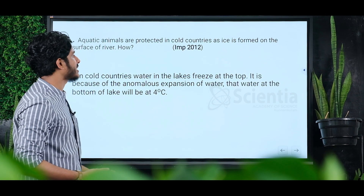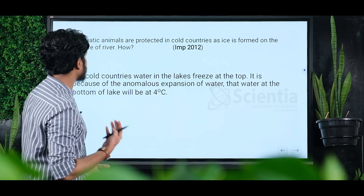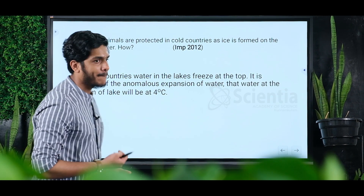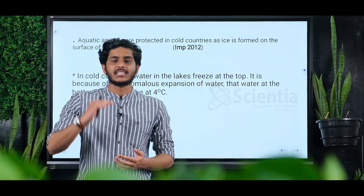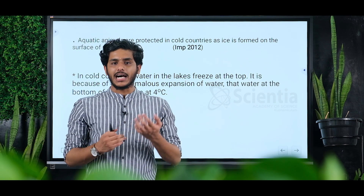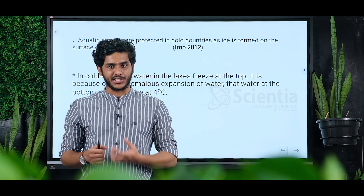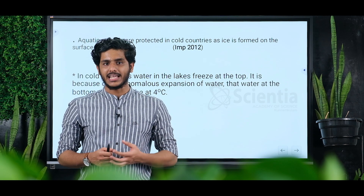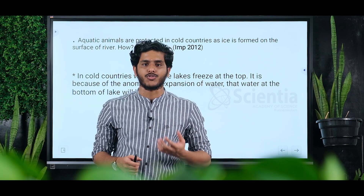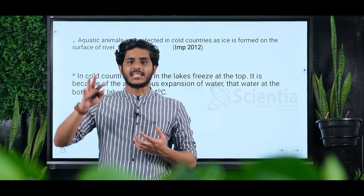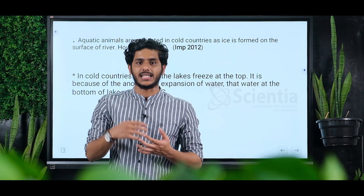Aquatic animals are protected in cold countries because ice forms on the surface of the river. Due to anomalous expansion of water, all the surface water freezes first, forming an ice layer on top.